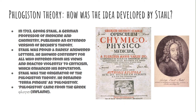In 1703, Georg Stahl, a German professor of medicine and chemistry, published an extended version of Becher's theory. Stahl was very proud — he rarely answered letters and showed real contempt for those who differed from his views, reacting violently to criticism. This gave him a massive reputation; he was a real heavyweight, and Stahl was the originator of the phlogiston theory.